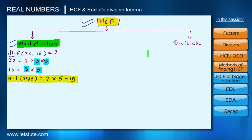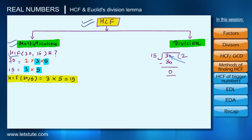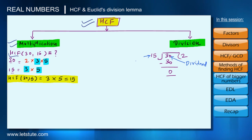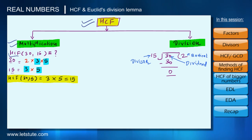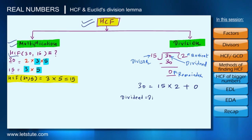Now let's find the HCF of 30 and 15 by the division method. We divide the two numbers — the bigger number is the dividend and the smaller number is the divisor. Here the quotient is 2 and the remainder is 0, since 15×2 = 30. We can write this as: 30 = 15×2 + 0, which follows the form: dividend = divisor × quotient + remainder.